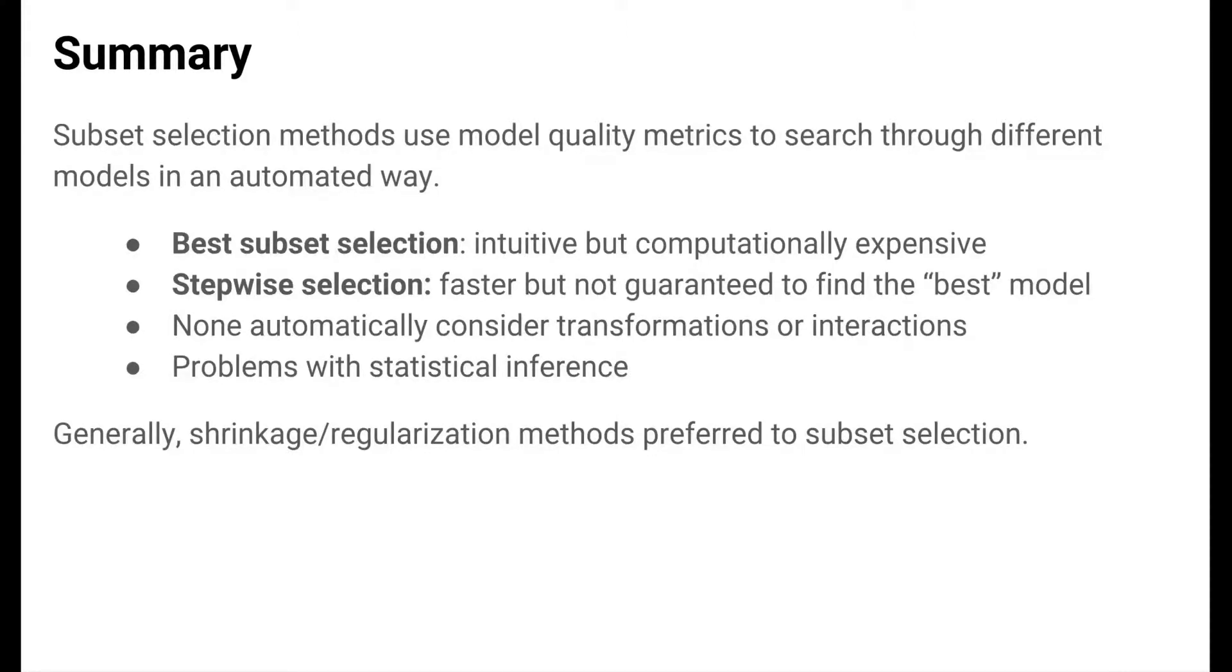So in summary, we've looked at subset selection methods that use model quality metrics to search through different models to guide model building in an automated way. Best subset selection is intuitive, but it's computationally expensive because so many models have to be fit. Stepwise selection methods, like forward and backwards, are faster, but aren't guaranteed to find the best subset of predictors. None of these methods automatically consider variable transformations or interactions, and these methods have problems with statistical inference on the final selected model. Generally, the shrinkage or regularization methods that we're going to cover next are preferred choices in the statistical and machine learning communities, but it's important that you've heard about these subset selection methods because they were very popular and still appear in the literature today.